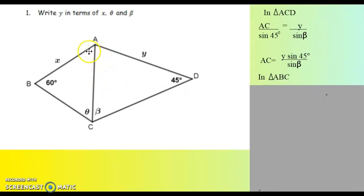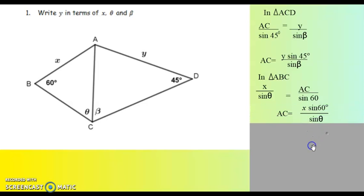Then I go to triangle ABC and I say there, that x over sine of theta is equal to AC over sine of 60 degrees. Then I write AC as the subject of the equation and I say AC is equal to x sine of 60 over sine of theta.